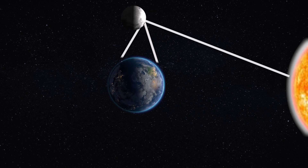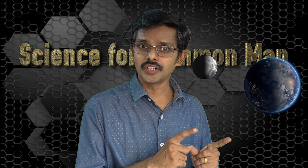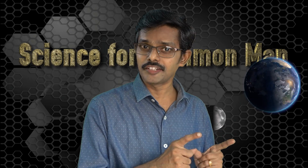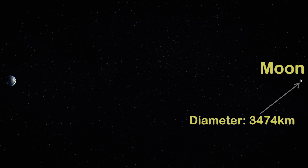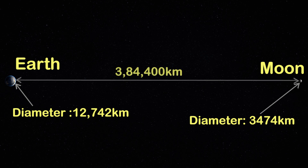The Moon becomes visible when that lighted surface becomes visible to Earth. In this illustration I have shown the Moon and Earth magnified — the actual size of the Moon is around one-fourth of the Earth, and the distance between the Moon and Earth is around 30 times the diameter of the Earth.